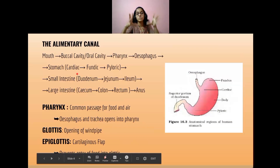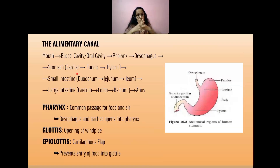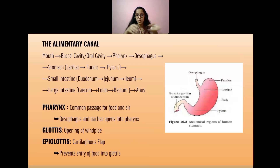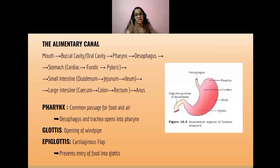The alimentary canal opens with the mouth, then goes to the buccal or oral cavity, then into the pharynx. The pharynx is the common passage for food and air, and the esophagus and trachea both open into this pharynx. Then comes the esophagus, followed by the stomach.